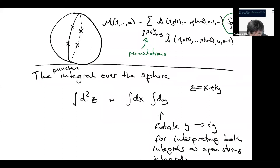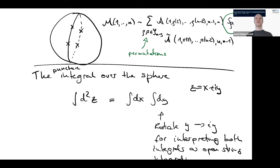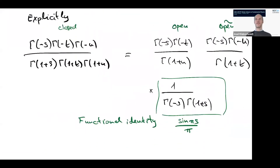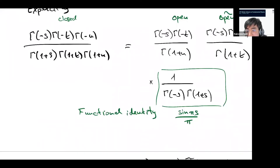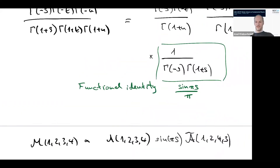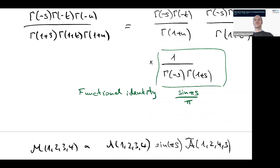Question: The two copies A and Ã come from the two semispheres. In one amplitude you have ordering 1,2,3,4 and in the other 1,2,4,3 — intuitively shouldn't it be a complete reversal like 4,3,2,1? The answer is that this has to do with having one U-channel and one T-channel. The question is how to see this more easily or intuitively.